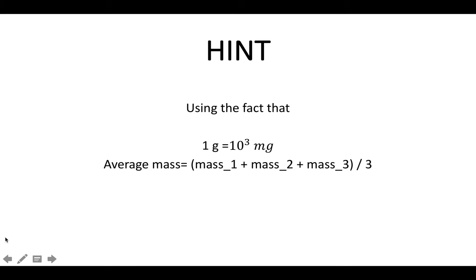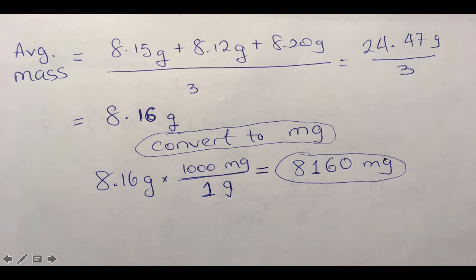Let's see what the hint says. One thing you should know, this probably would be given to you during an exam, but it's good to know that one gram equals a thousand milligrams. Average mass means the mass of the first one plus the second one plus the third one, and then you divide it by three. That's the average mass. So that's how I did it.